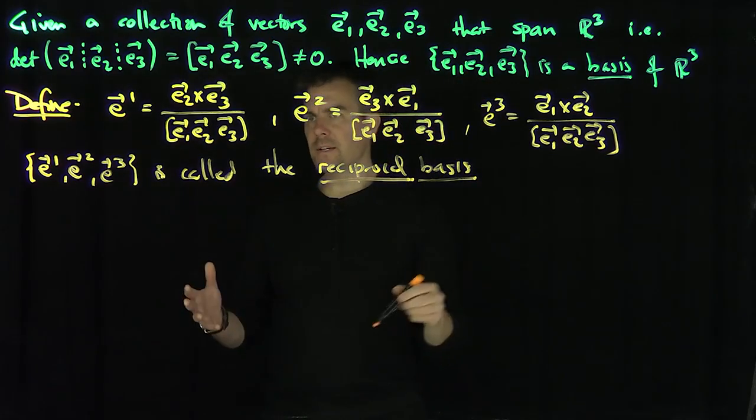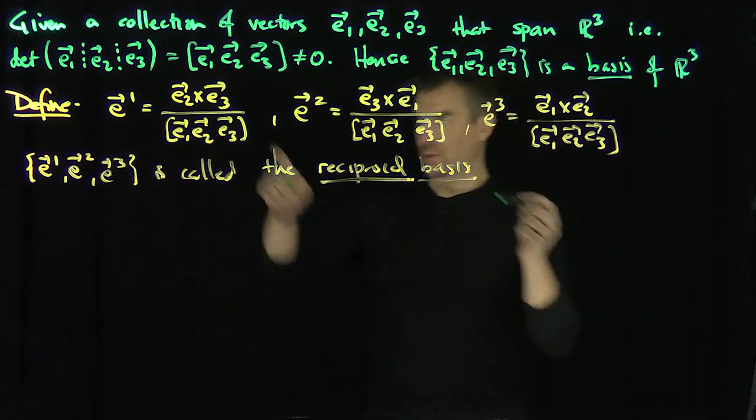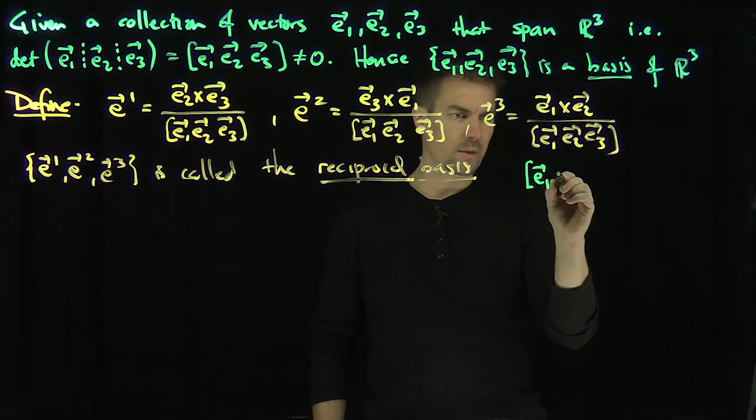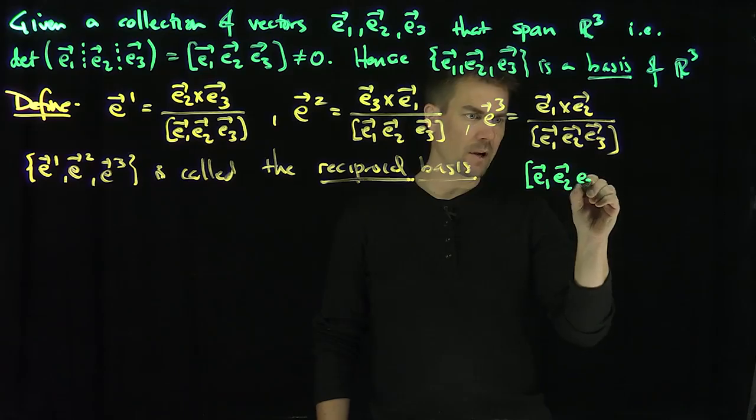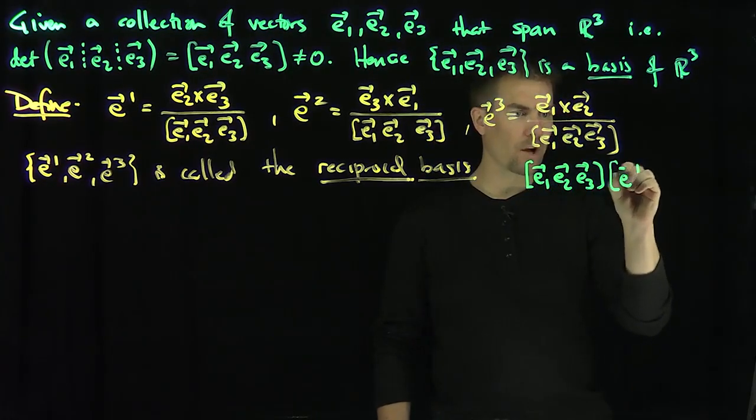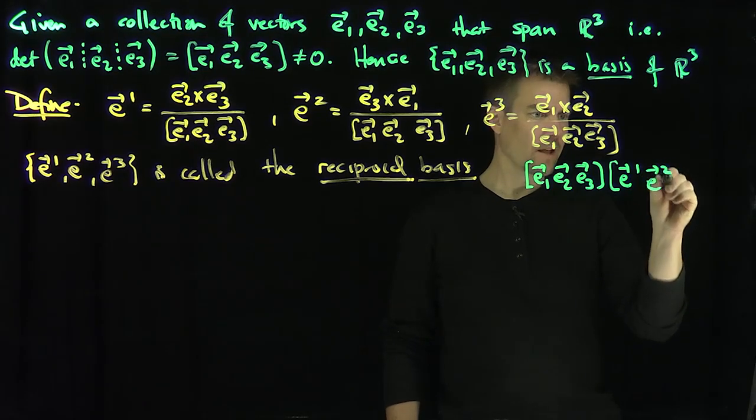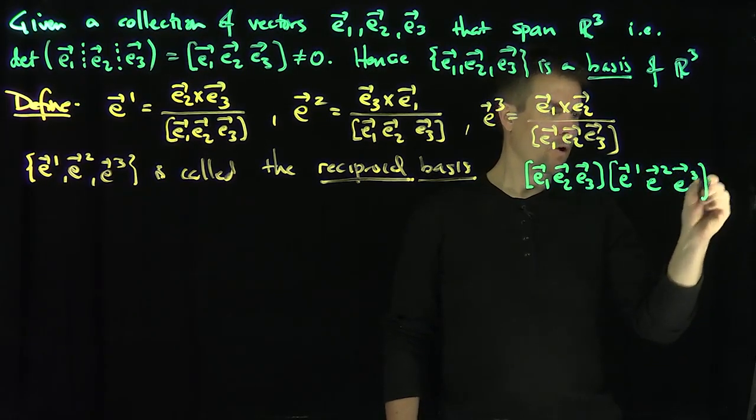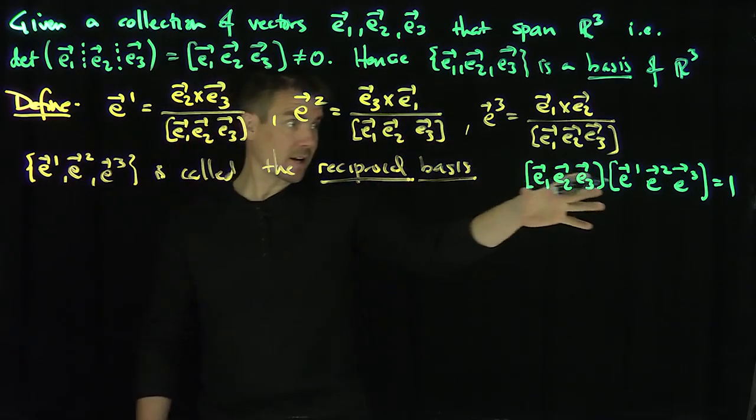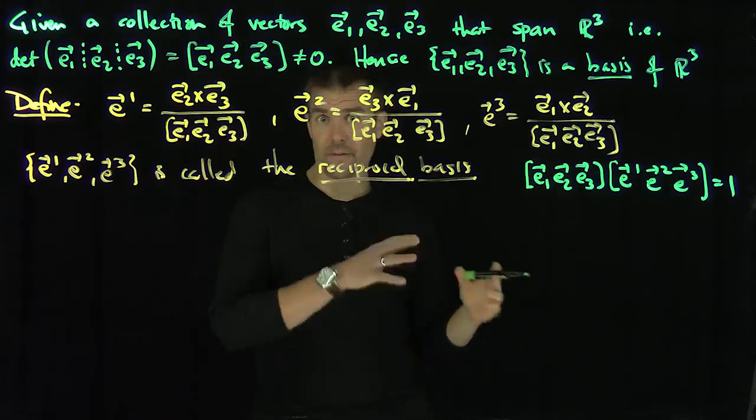The reason it's called the reciprocal basis, we'll prove this in further videos when we start understanding properties of these things, but it's easy to check that if I look at the determinant of E1, E2, and E3, we can check that if I multiply this by the determinant of E1 upper, E2 upper, and E3 upper, we get 1. In other words, their determinants are reciprocals of each other. So we'll prove this identity in a further video, because it uses a lot of algebra, like the Bac-Cab identity and some vector identities.